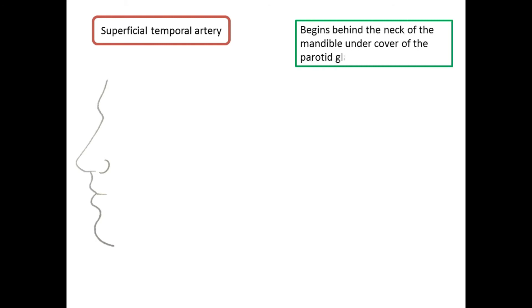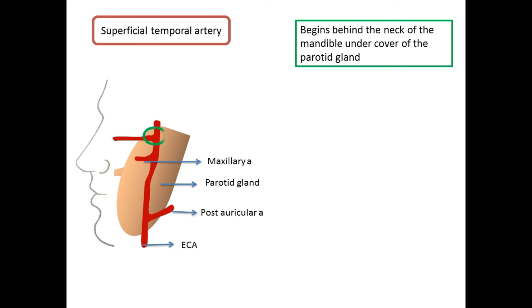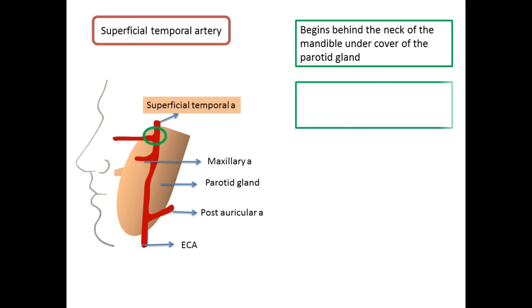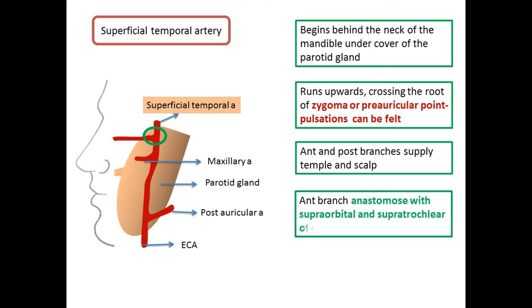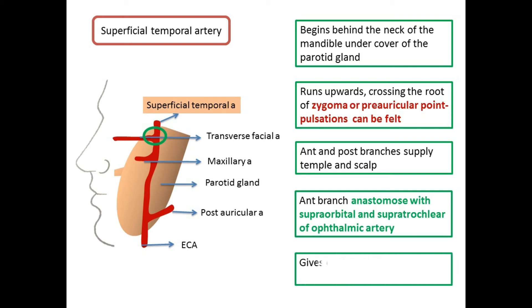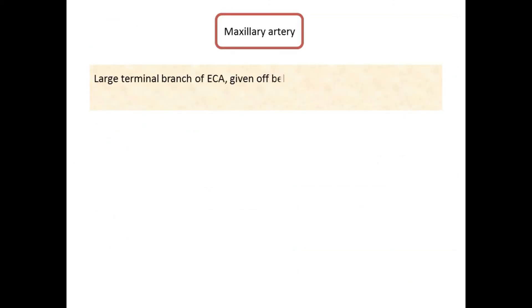The superficial temporal artery is the smaller terminal branch of the external carotid artery. It begins behind the neck of the mandible under cover of the parotid gland, runs vertically upwards crossing the root of the zygoma at the preauricular point where its pulsations can be easily felt. About 5 centimeters above the zygoma it divides into anterior and posterior branches which supply the temple and scalp. The anterior branch anastomoses with the supraorbital and supratrochlear branches of the ophthalmic artery. It also gives off a transverse facial artery and a middle temporal artery which runs on the temporal fascia deep to the temporalis muscle.